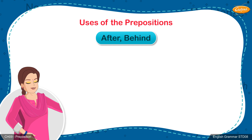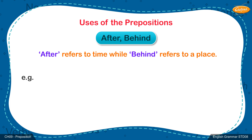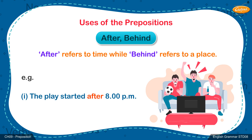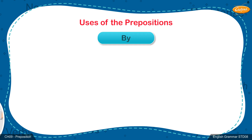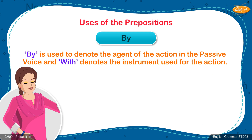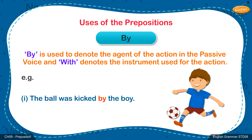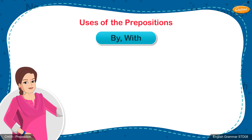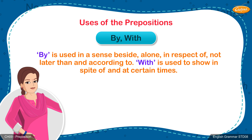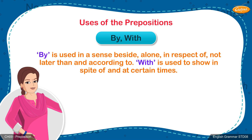After vs Behind: 'After' refers to time, while 'behind' refers to a place. Examples: 1. The play started after 8 p.m. 2. The boy stood behind the tree to hide from his friends. By vs With: 'By' is used to denote the agent of the action in the passive voice, and 'with' denotes the instrument used for the action. Examples: 1. The ball was kicked by the boy. 2. I write with a pencil. 'By' is also used in a sense of beside, alone, in respect of, not later than, and according to. 'With' is used to show in spite of and at certain times. Examples: 1. All the solutions for the problems were typed by me. 2. My brother was willing to come with me for the interview.